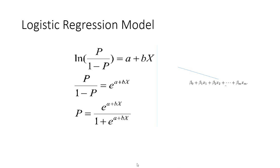When there is only a single variable, the model takes one form; if you have multiple independent variables, it can take a corresponding extended form. Remember that there is no restriction on the independent variables — independent variables can be anything: categorical, continuous, nominal, binary, anything.